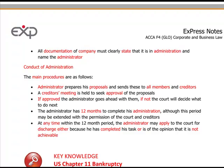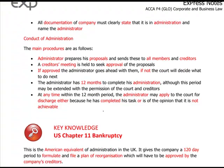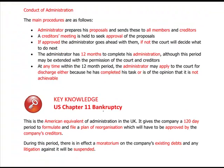At any time within the 12-month period, the administrator may apply to the court for discharge, either because the task has been completed or because the administrator is of the opinion it cannot be achieved — since the administrator doesn't want to be on the hook for running a business that cannot be turned around. For reference, the US equivalent is called Chapter 11.